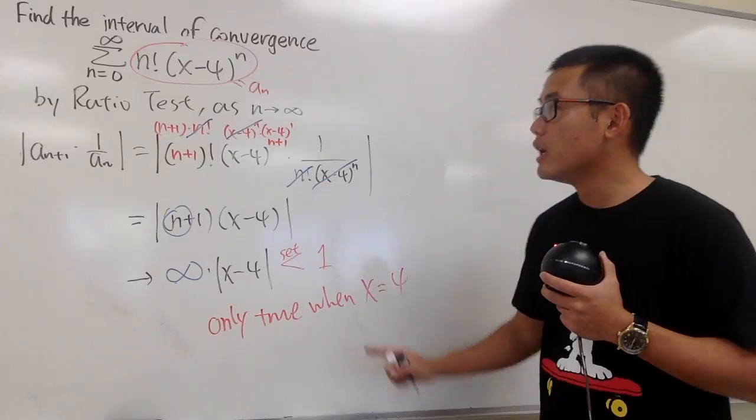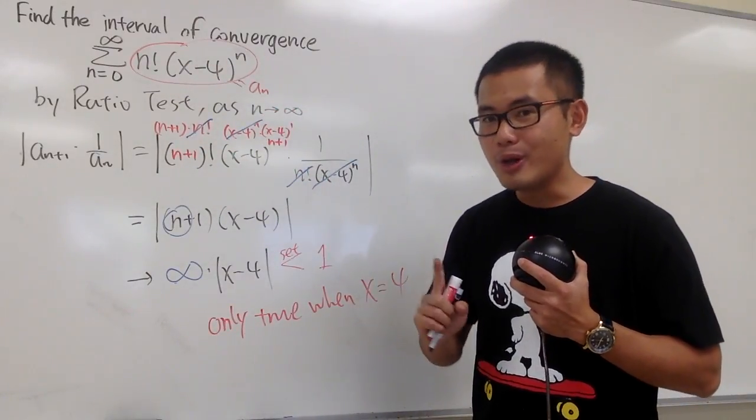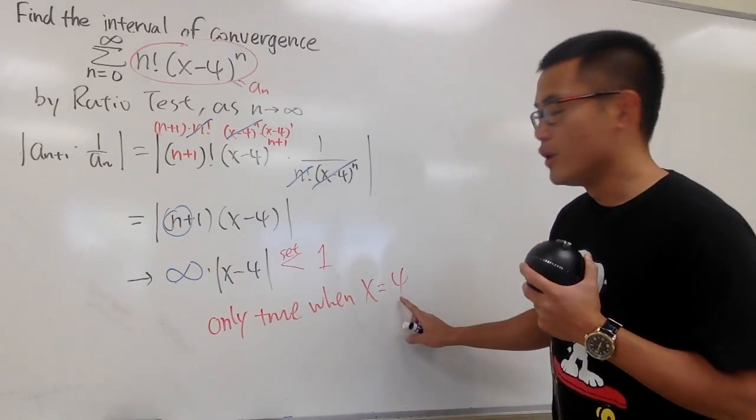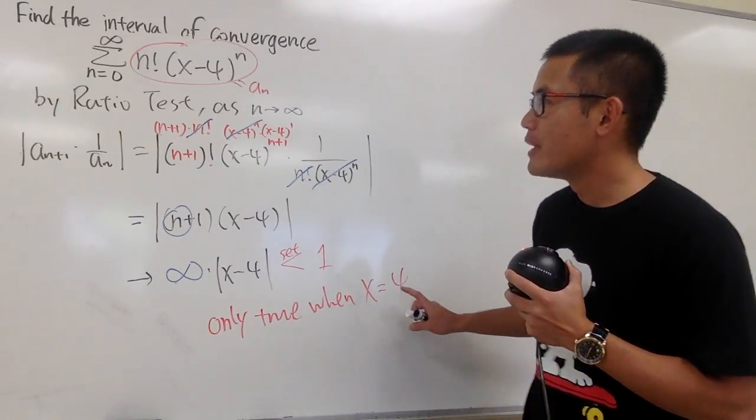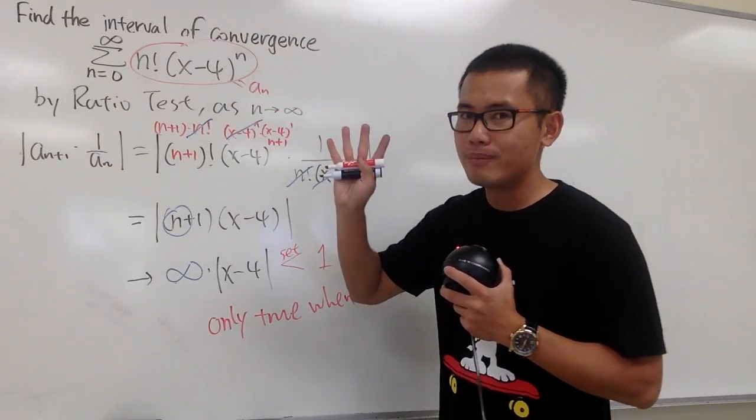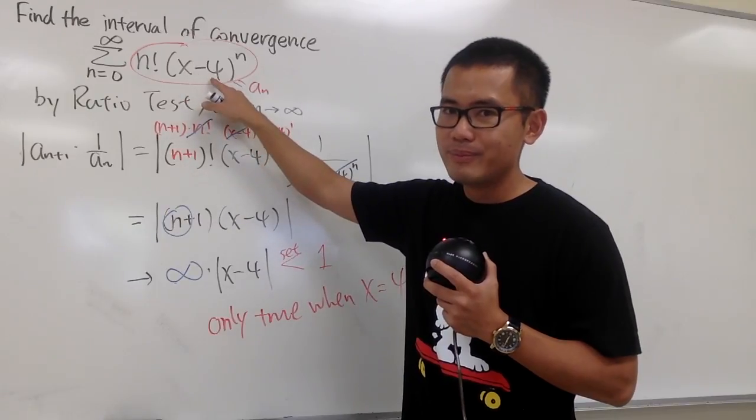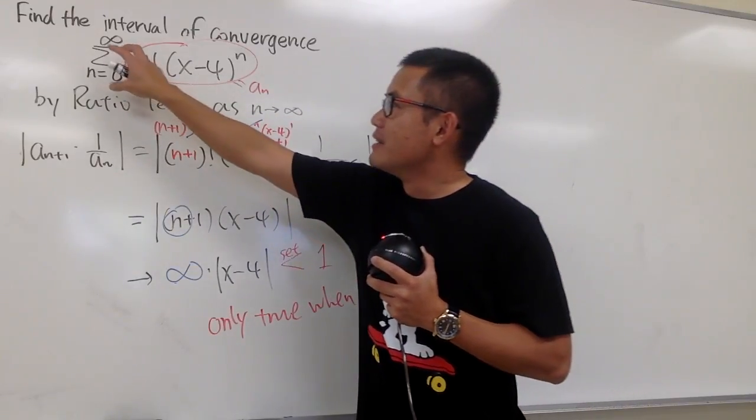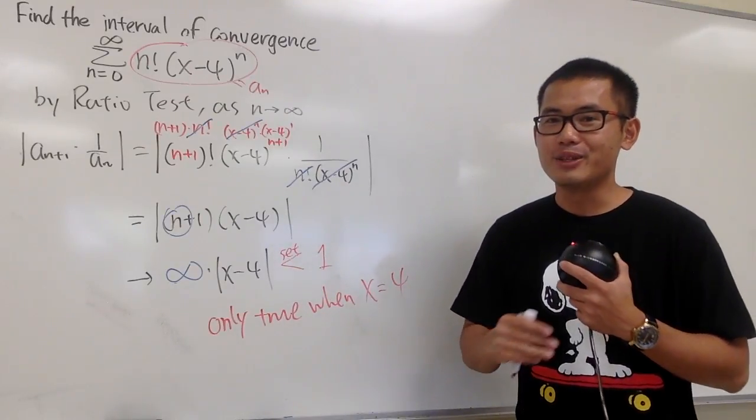The reason for this is because if you are talking about the convergence of a power series, whenever you are at the center—in this case, the center is 4—if you plug in x equals 4 into here, 4 minus 4 will be 0. And then the sum of infinitely many 0s is still going to be 0. So it's trivial that it's going to converge.